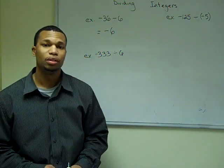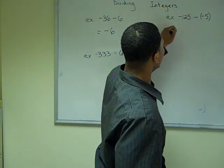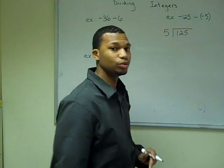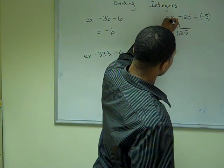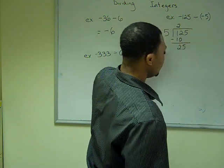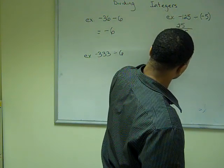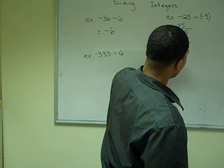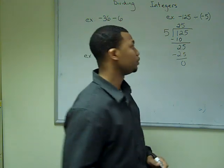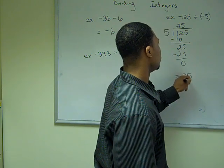In our next example, we can utilize long division. We set up 5 as the divisor with 125 inside the division bar. 5 can go into 12 two times. We subtract 10, we have 2, bring down the 5. 5 can go into 25 five times, with zero remainders. Since both of our signs are the same, our answer is going to be positive 25.